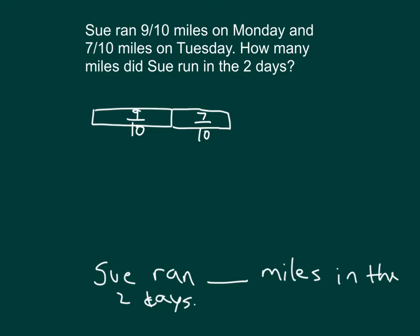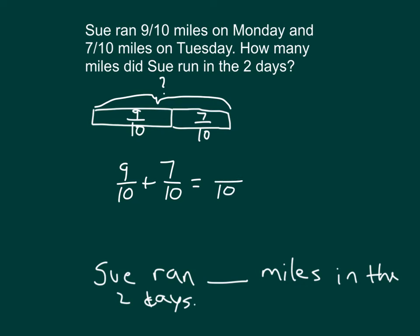And then what would we do with those two numbers? We would add them together. In adding them together, we would represent our solution and then solve it. We have 9 tenths plus 7 tenths. We still have tenths, and 9 and 7 is 16, so we have 16 tenths.